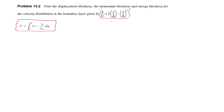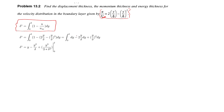Substituting u over u-infinity, where capital U equals u-infinity, you get the integral from 0 to delta of (1 minus 2y over delta minus (y over delta) squared) dy. Integrating: integral of dy is y, integral of y gives y squared over 2, integral of y squared gives y cubed over 3. Solving, you get delta by 3. This is the displacement thickness.